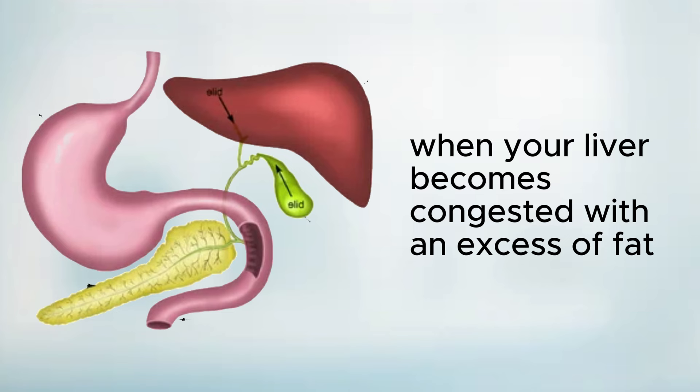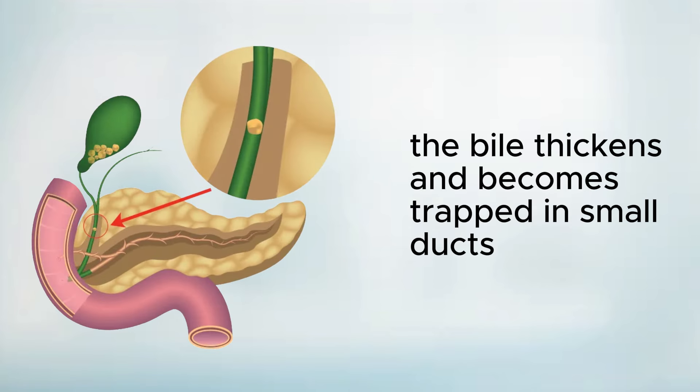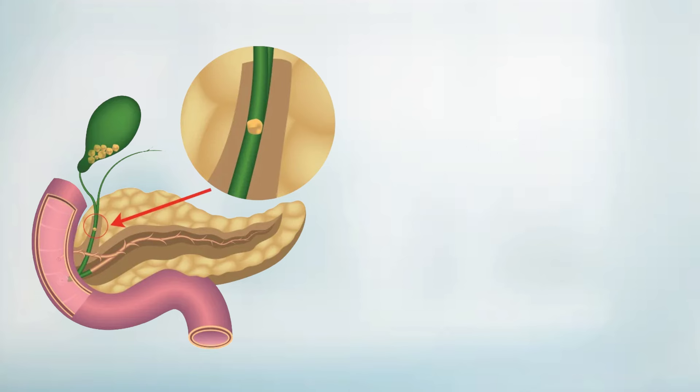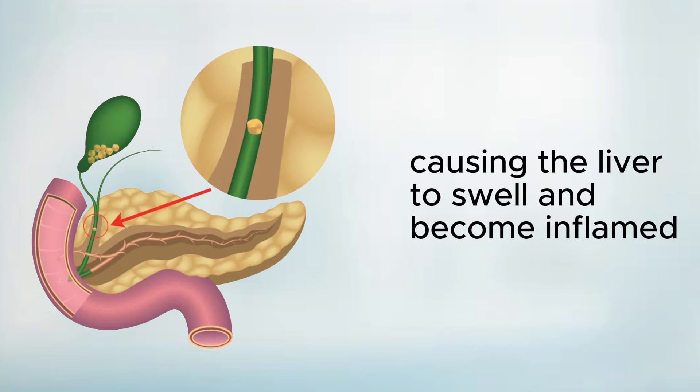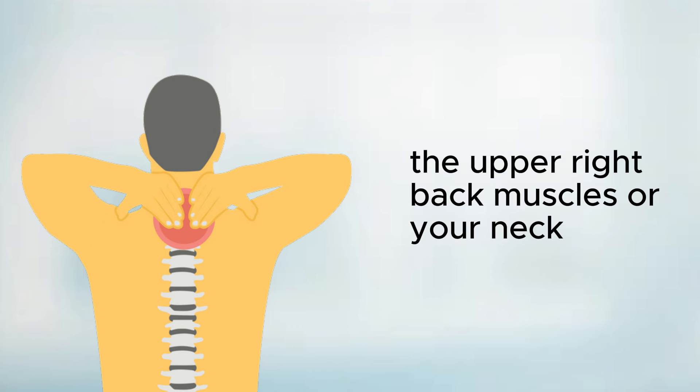However, when your liver becomes congested with an excess of fat, the bile thickens and becomes trapped in small ducts, causing the liver to swell and become inflamed. This swelling exerts pressure on the phrenic nerve running along your right side, which can result in referred pain in the upper right back muscles or your neck.